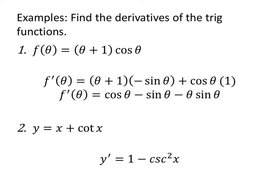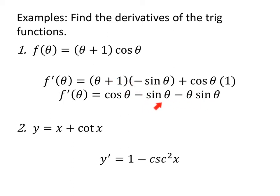Now let's take some of these rules and use them. If f(θ) equals θ plus 1 times cosine of θ, then the derivative is θ plus 1 times the derivative of cosine — that's negative sine θ — plus cosine of θ times the derivative of θ plus 1. The derivative of θ is 1, derivative of 1 is 0. Cleaning it up: negative θ sine θ minus sine θ plus cosine θ.